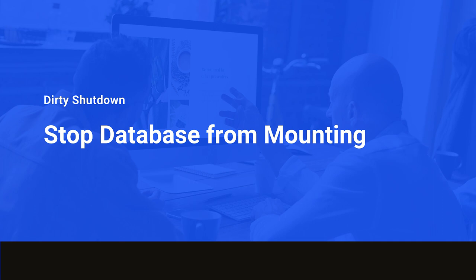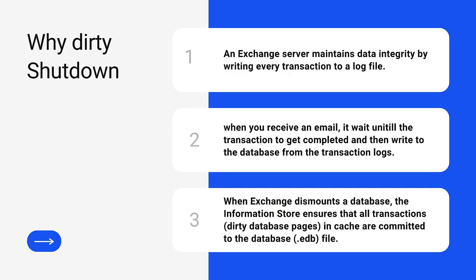A dirty shutdown happens at the database level and this stops users from accessing emails in the database, creating new emails, sending emails to outside or inside the organization. So you can call it a total interruption to the service. A dirty shutdown means improper shutdown happened. This is also one of the time consuming tasks for most exchange administrators. First, let's understand why this dirty shutdown is happening to the exchange server database.